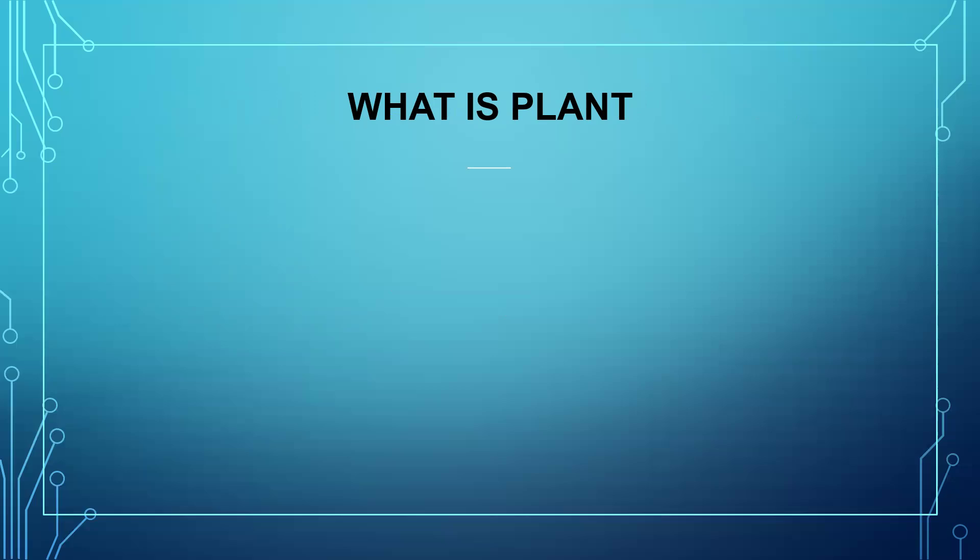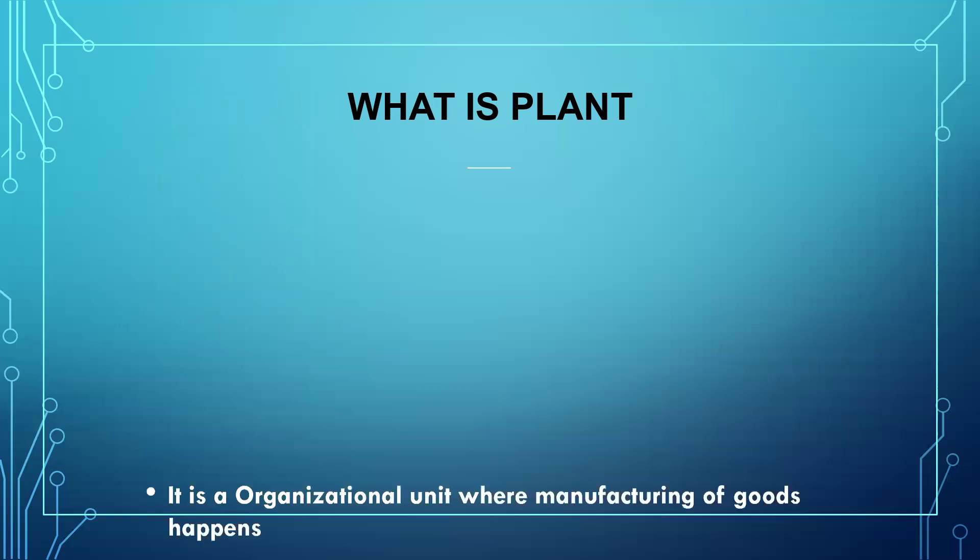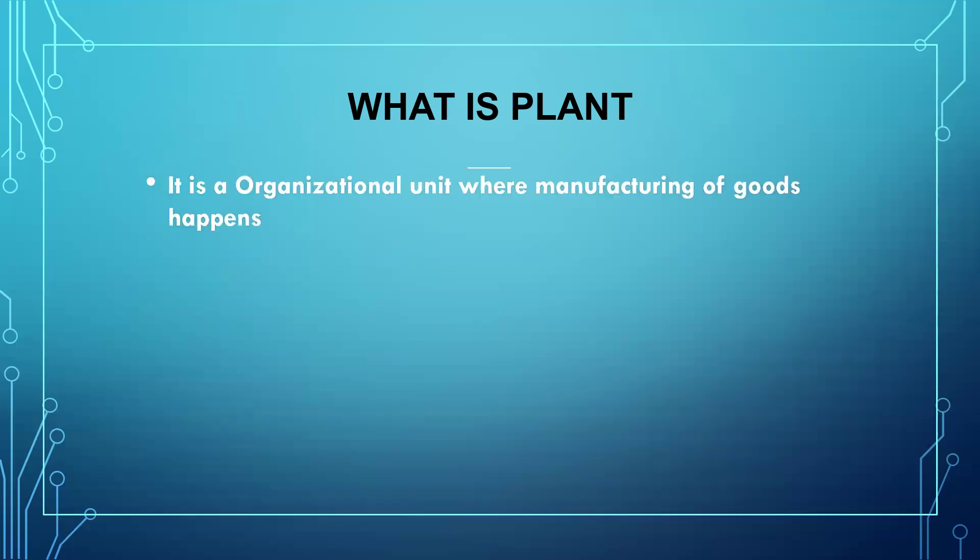Next question: what is a plant? Your answer should be: it's an organizational unit where the manufacturing of goods will be happening. Manufactured goods are stored in the storage location. It is an organizational unit where manufacturing of goods happens. This is the definition for plant and this is the expected answer.